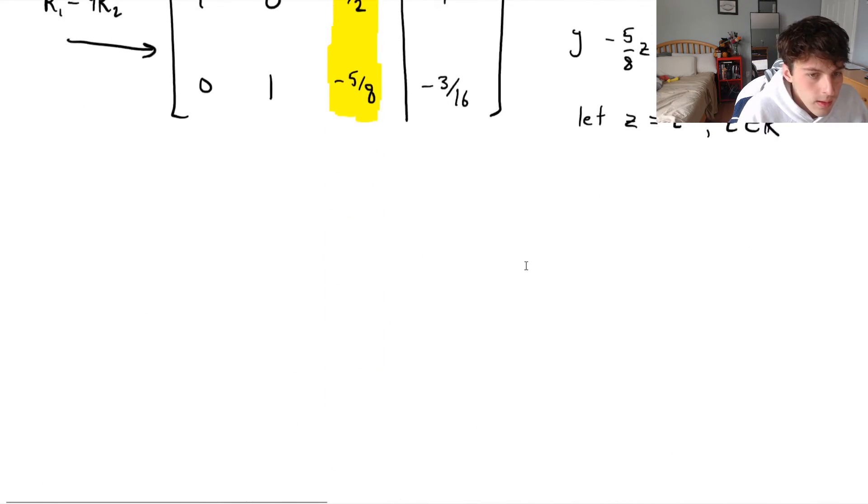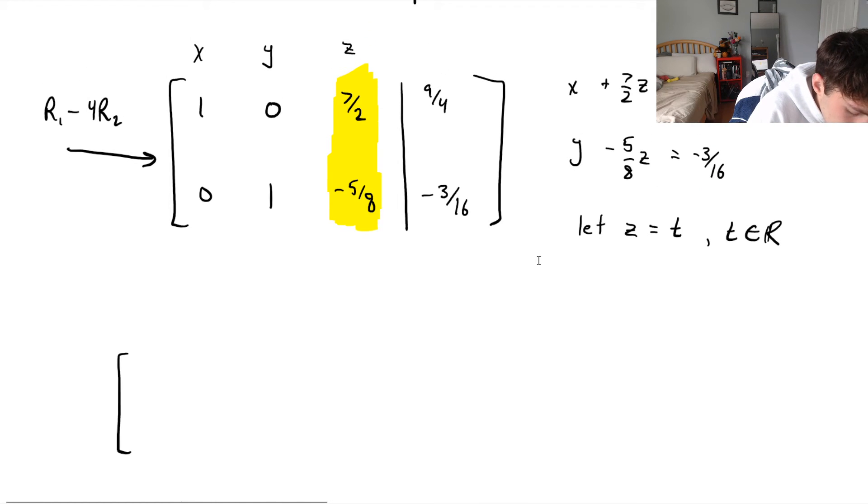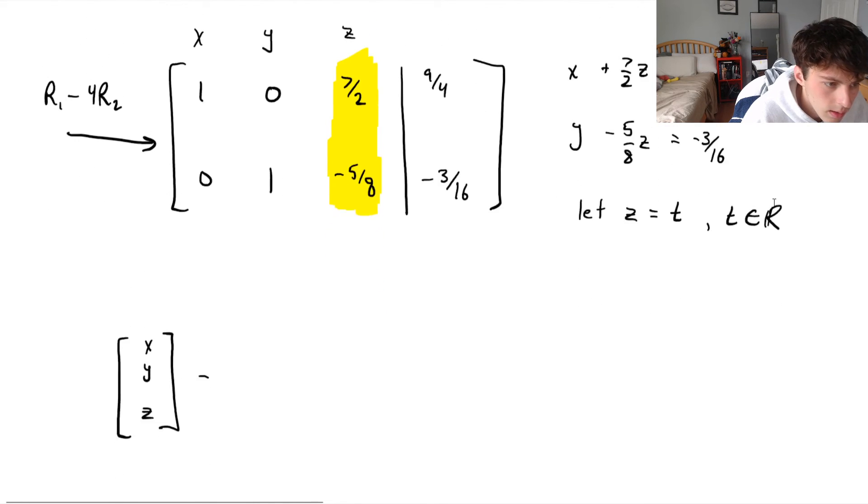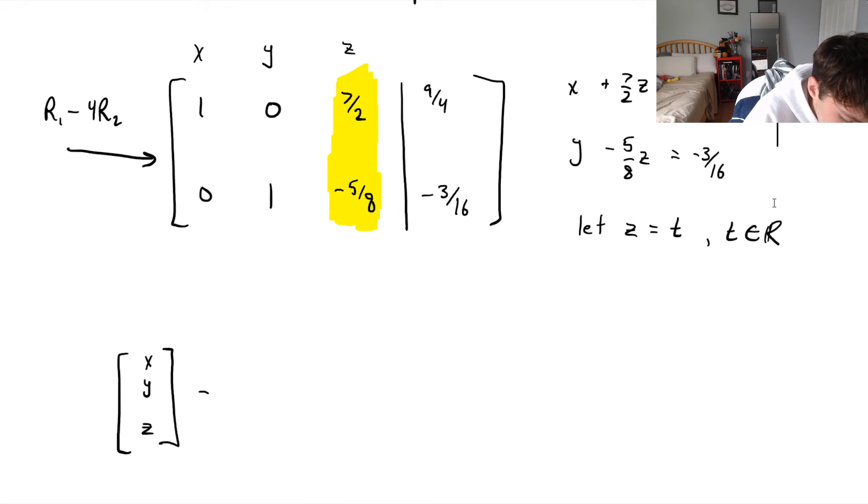So let's start by writing out a vector equation of a line. x, y, z would be equal to, well, what is x? We can rearrange for x right here. We have 9 fourths minus 7 over 2z. From right here. So we can say x would be equal to 9 fourths minus 7 over 2z. I'm just replacing the x entirely. y, similarly, we could do minus 3 over 16, and then we can move the 5 eighths z to the other side. Plus 5 eighths z. Great. And z remains unchanged.